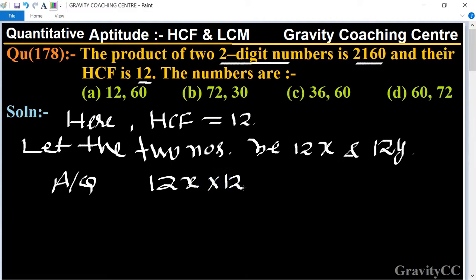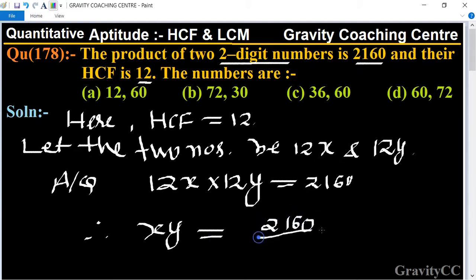Therefore, xy equals 2160 upon 12 times 12. First of all we cancel by 12. 12 goes once in 12, and 12 goes once in 12. So xy equals 15.